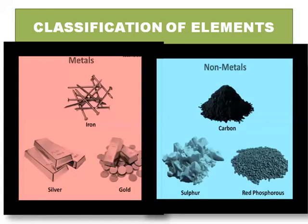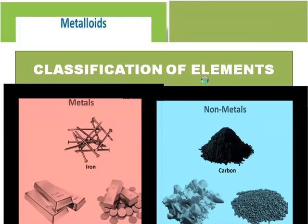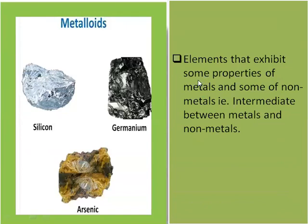Classification of elements: on the basis of physical and chemical properties, there are three groups of elements. First, metals. Second, non-metals — with opposite properties of metals. Third, metalloids. Iron, silver and gold are common metals. Carbon, sulphur and red phosphorus are non-metals. Metalloids are elements that exhibit some properties of metals and some of non-metals — intermediate between metals and non-metals. Examples include silicon, germanium and arsenic.